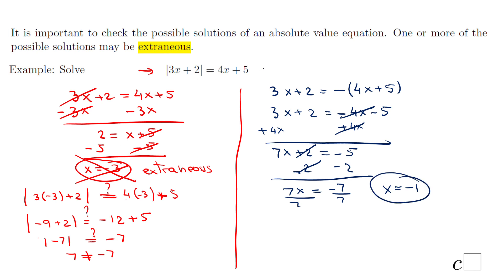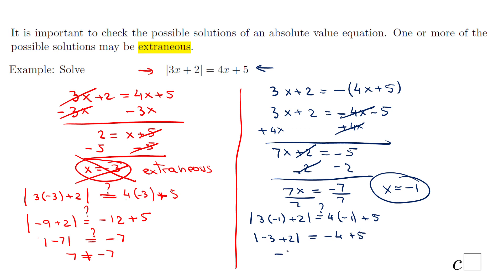Let's check the solution by plugging in: absolute value of 3 times negative 1 plus 2 equals 4 times negative 1 plus 5. The right side will be a positive number, so we continue. Left side: absolute value of negative 3 plus 2, which is absolute value of negative 1. Right side: negative 4 plus 5 equals 1. And absolute value of negative 1 is 1, which equals 1 — a true statement. So x equals negative 1 is a good solution, while x equals negative 3 was extraneous.